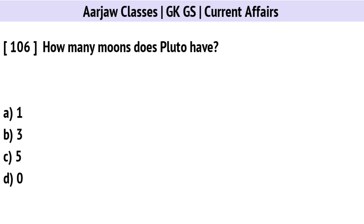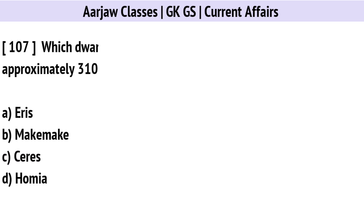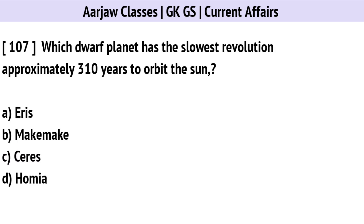How many moons does Pluto have? Correct option is C: 5.